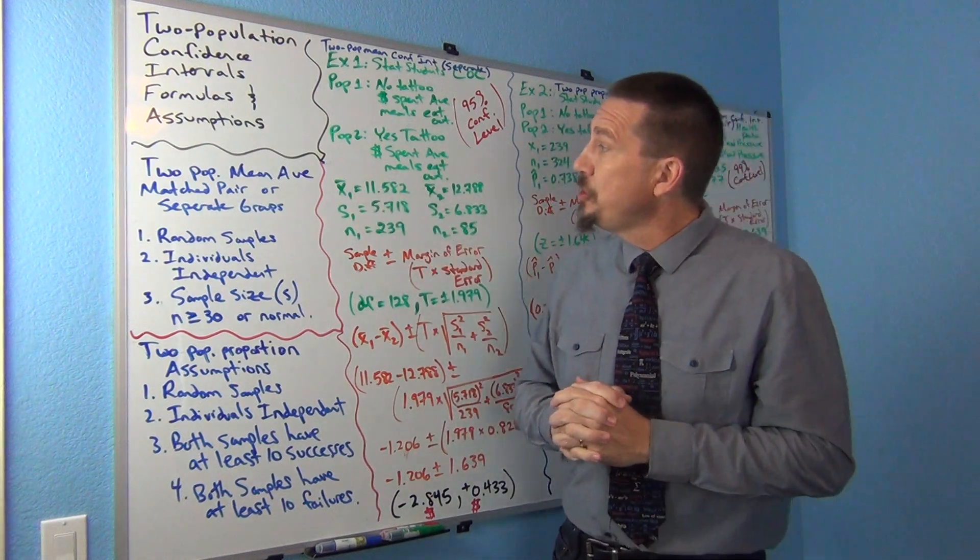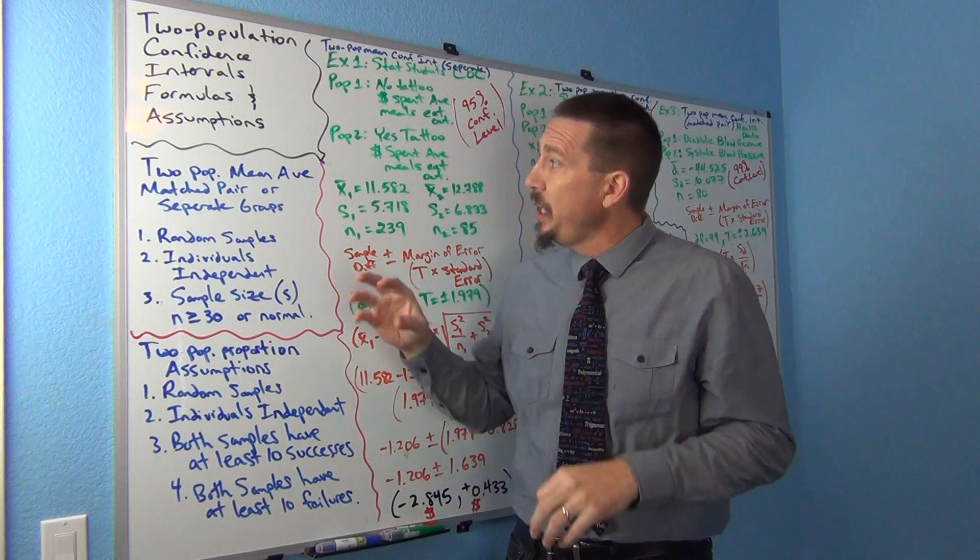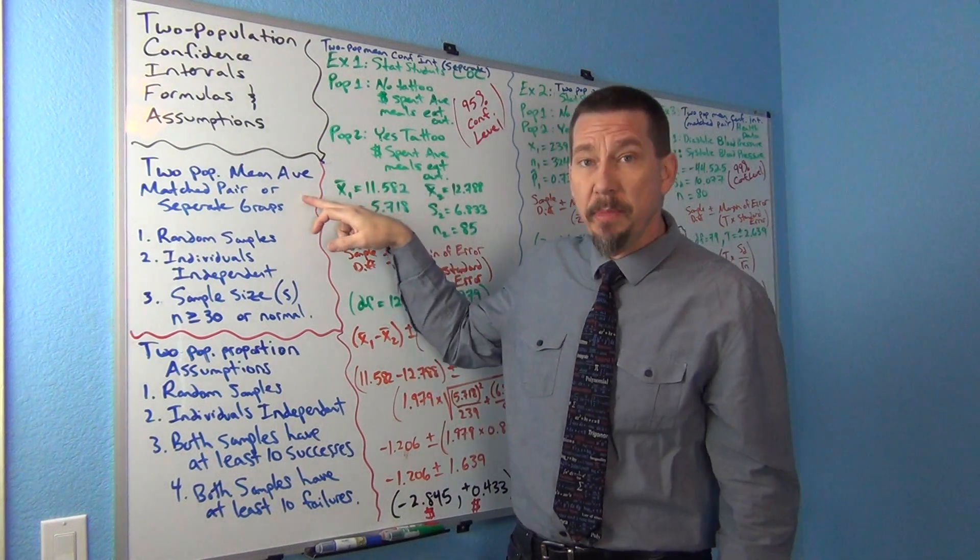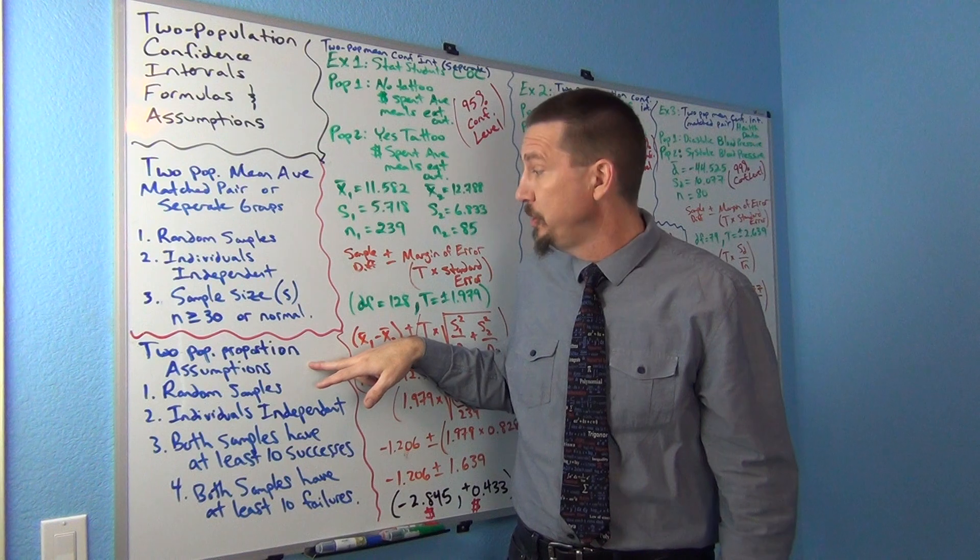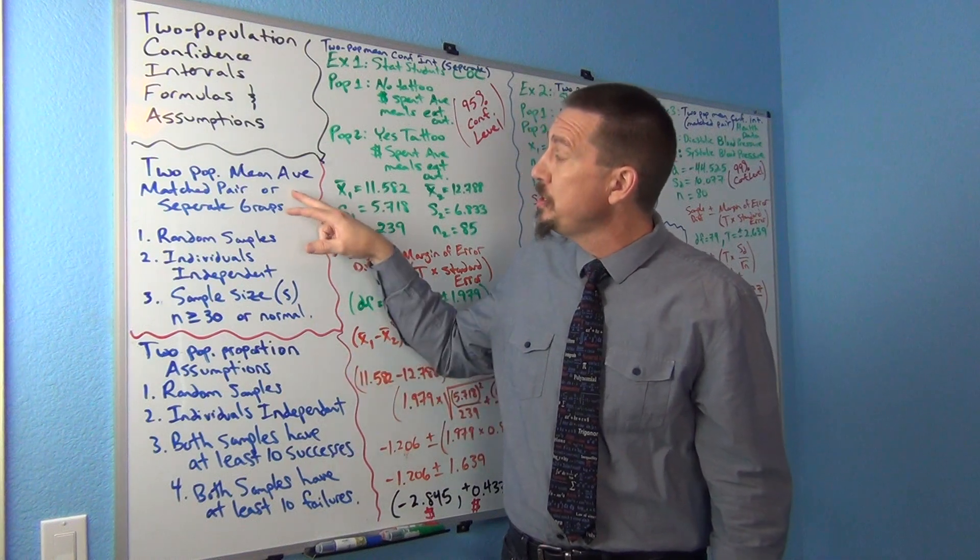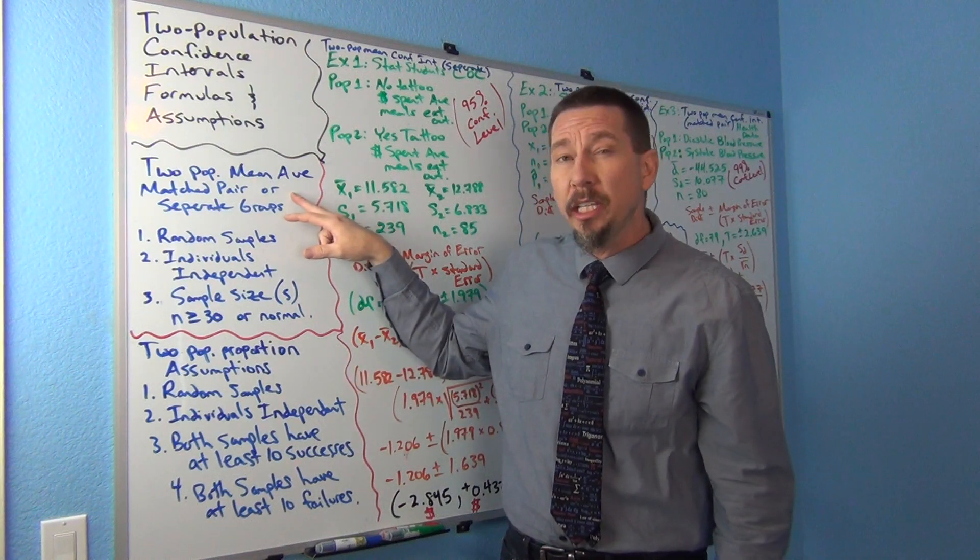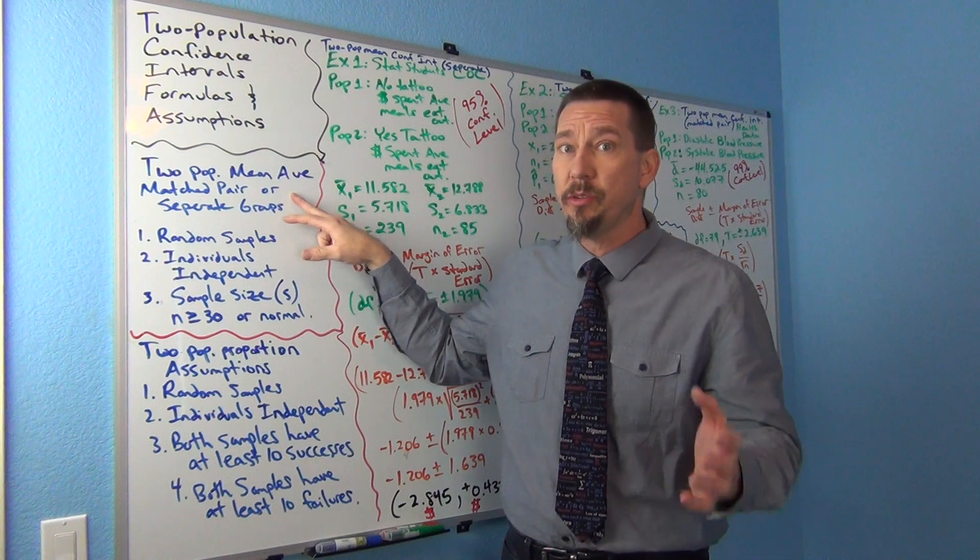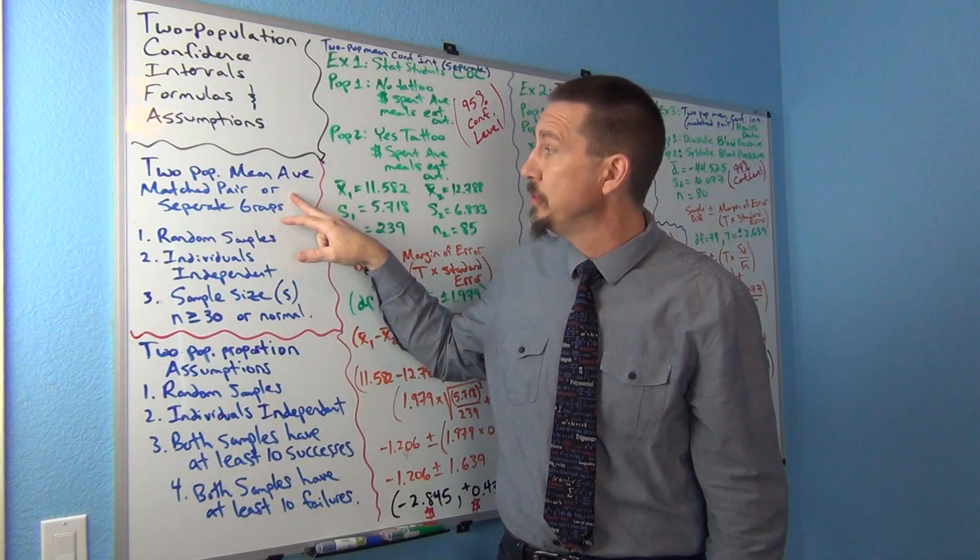So we're dealing with two population confidence intervals, and we're going to be dealing with two population mean and two population proportion. We'll also be talking a little bit about matched pair, which is sort of a different version of the two population mean confidence interval.